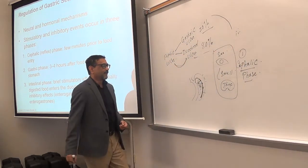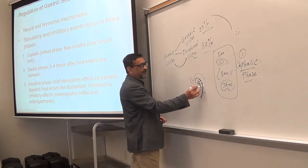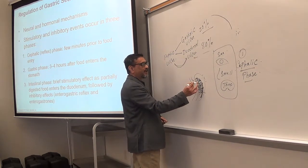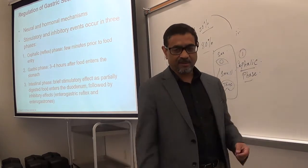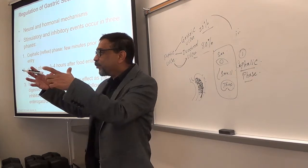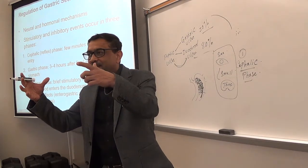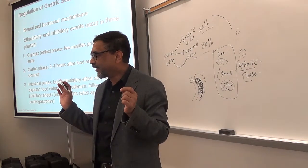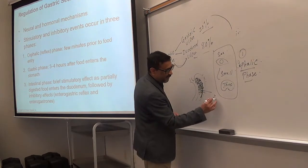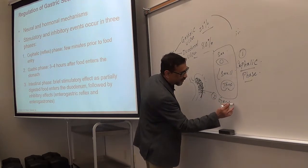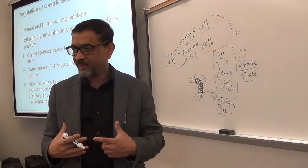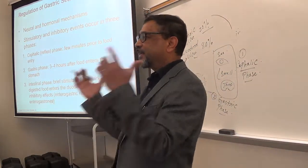Number two: after you swallow the food, food enters into the stomach. When the food is inside the stomach, secretion occurs. Mechanoreceptors activated by pressure are activated, and food is chemical so chemoreceptors are also activated. That will cause secretion and movement. That is the gastric phase — when the food is inside the stomach. So: cephalic phase before the food arrives in the stomach; gastric phase when the food is inside the stomach.